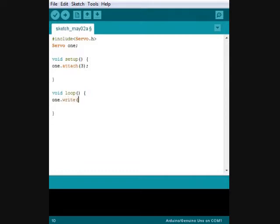1 write 90 which moves it to position 90, delay 600 milliseconds, 1 write 0 which moves the servo to position 0, and delay 600 milliseconds.